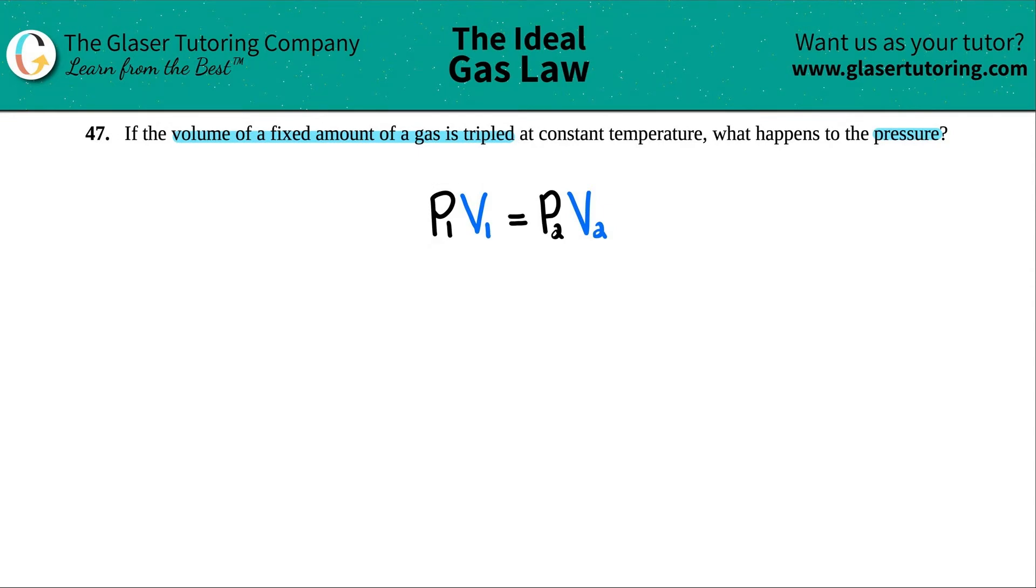Now they did say that the volume was tripled, so that means I increased my volume by three times. So what's going to happen to the pressure? Well, since it's an indirect relationship, the pressure has to drop by how much? The same number: three times.